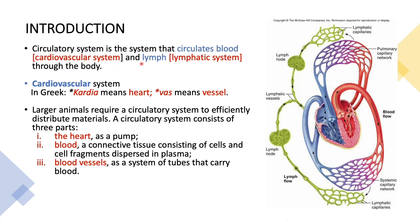Last but not least, discuss the causes and symptoms of lymphoma and lymphedema. The circulatory system is the system that circulates blood — we call that the cardiovascular system — and lymph, the lymphatic system, throughout our body. The cardiovascular system is shown here, and the green ones represent the lymphatic system. In Greek, 'cardio' means heart while 'vaso' means vessel. Larger animals require the circulatory system to efficiently distribute materials.